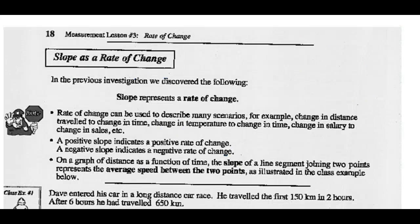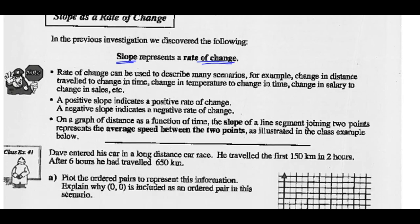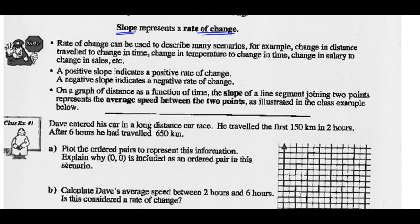Slope as a rate of change: in the previous investigation, we discovered that slope represents a rate of change. Rate of change can describe many scenarios — change in distance to change in time, change in temperature to change in time, change in salary to change in sales. A positive slope indicates a positive rate of change, and a negative slope indicates a negative rate of change. On a distance-time graph, the slope of the line segment joining two points represents the average speed.